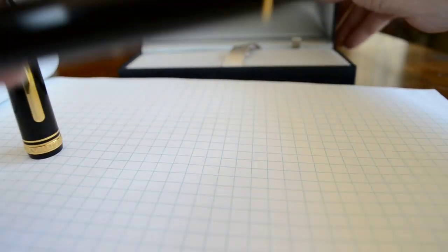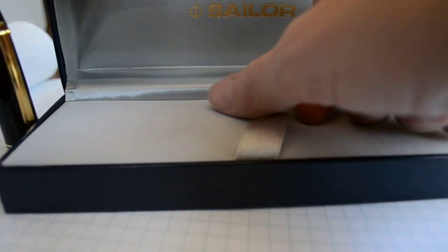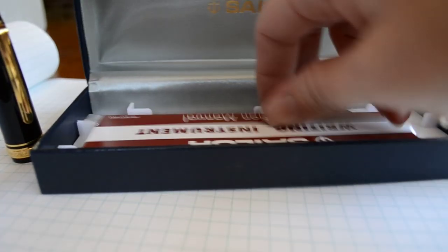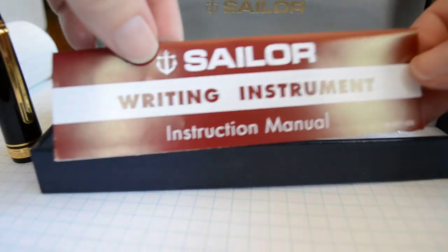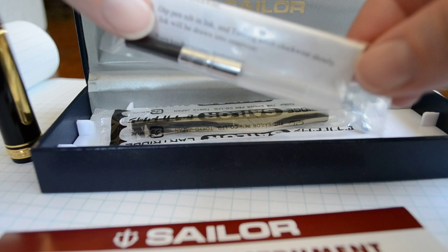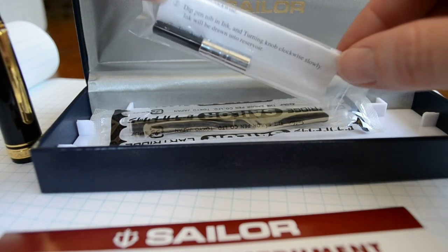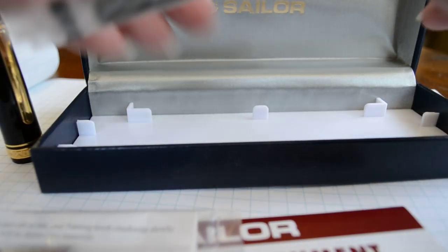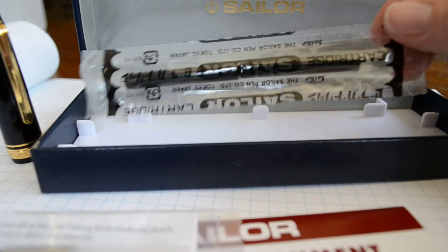Here's all the things that come with the Sailor. It comes with your writing instrument instruction manual, your converter so that you can fill it with ink, and two black Sailor cartridges.